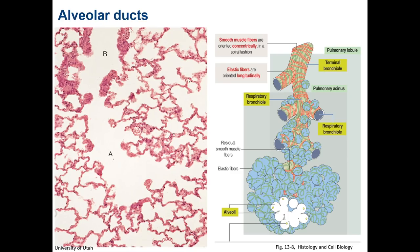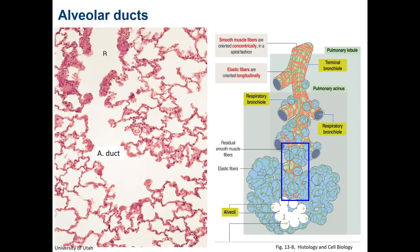Moving distally along the respiratory bronchiole, the openings to alveoli become more and more numerous and closer together. At the distal ends, the bronchioles branch into tubes called alveolar ducts. These ducts are completely lined with alveoli. The alveolar duct is lined with low or simple epithelium. In the thin lamina propria, a strand of smooth muscle cells surrounds the opening to the alveolus, and there is a network of supporting elastic and collagen fibers. Also present along the duct wall are smooth muscle knobs that bulge into the lumen, now lined with alveolar epithelium.